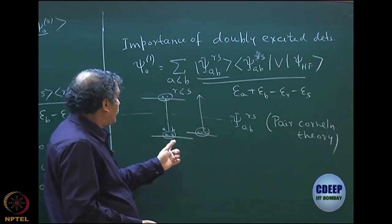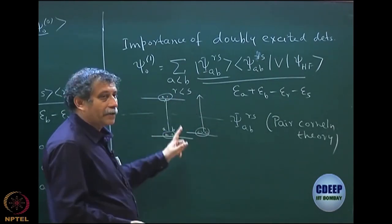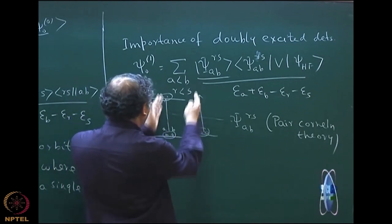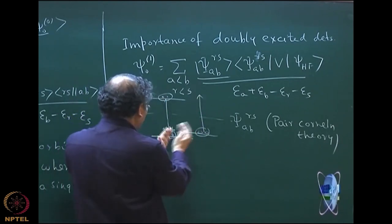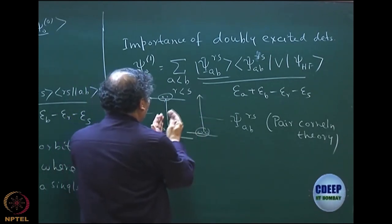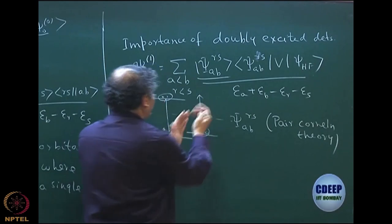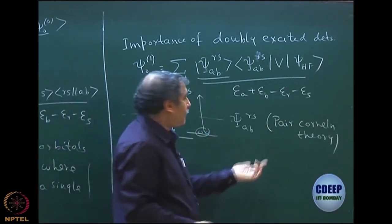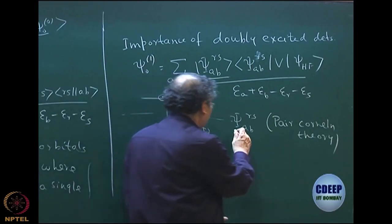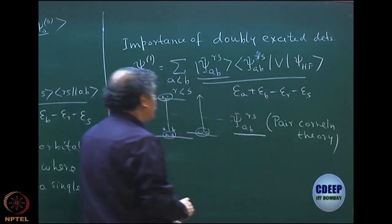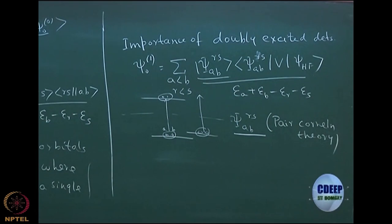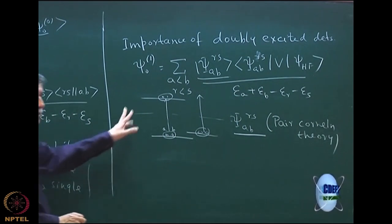For a many-particle problem, another set of pairs can also get excited, and these two excitations can take place at the same time. What you will see is actually a fourfold excitation — a quadruply excited determinant. The probability of this taking place is simply the product of the two pair probabilities, since they are occurring simultaneously and independently. This is the content of Sinanoglu's pair correlation theory.